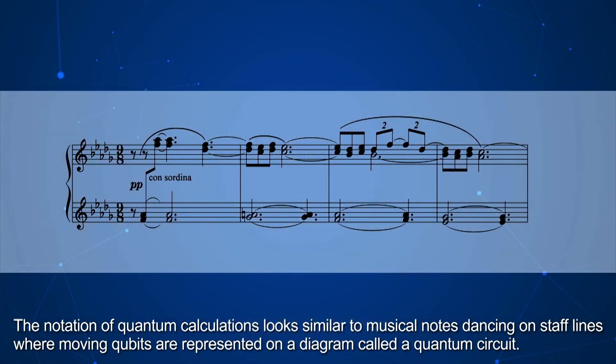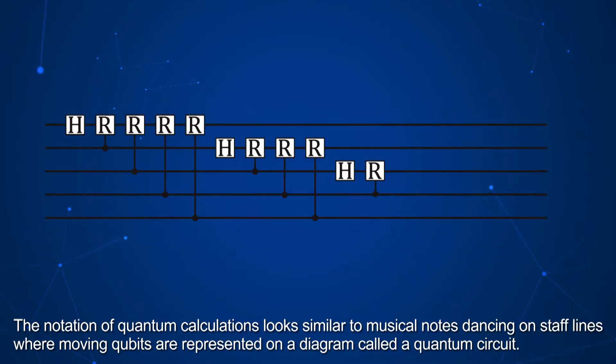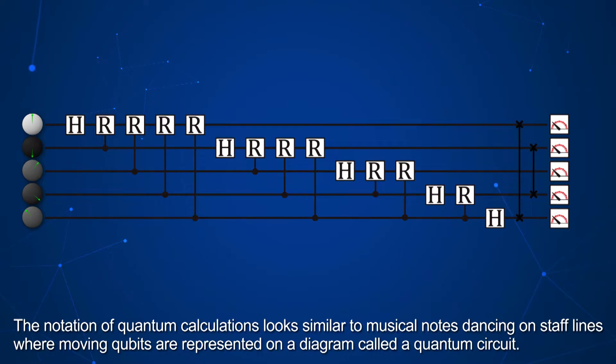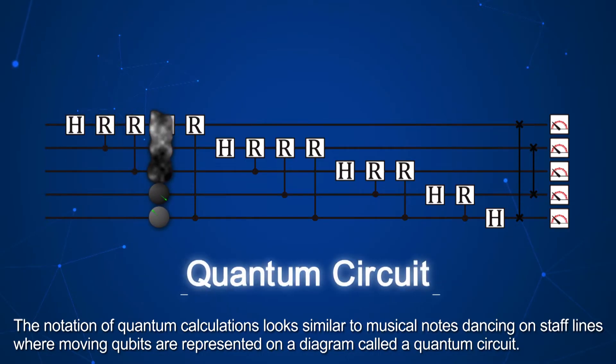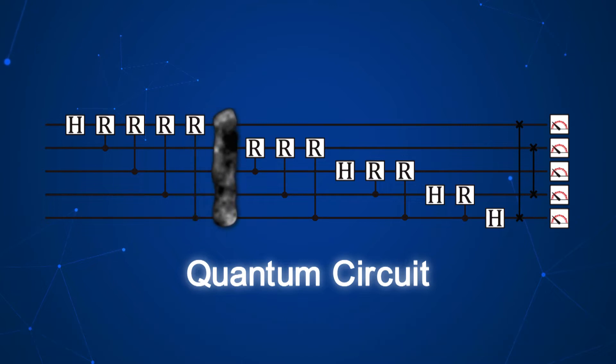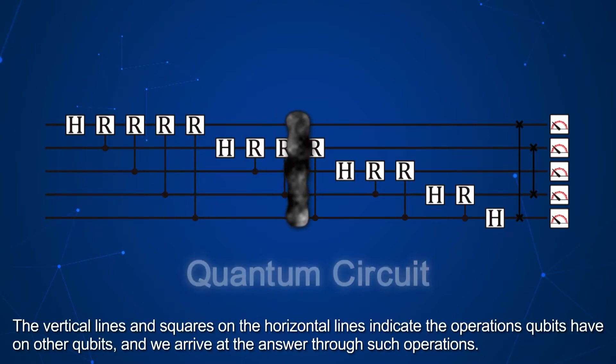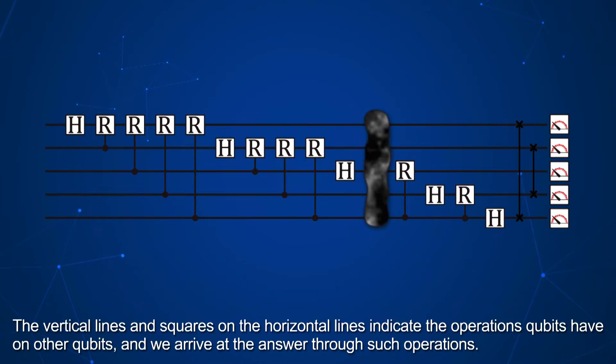The notation of quantum calculations looks similar to musical notes dancing on staff lines, where moving qubits are represented on a diagram called a quantum circuit. The vertical lines and squares on the horizontal lines indicate the operations qubits have on other qubits, and we arrive at the answer through such operations.